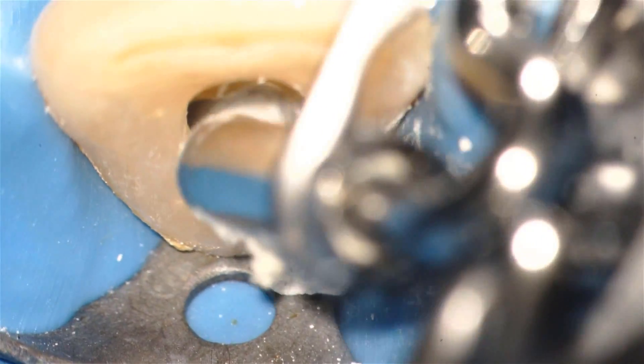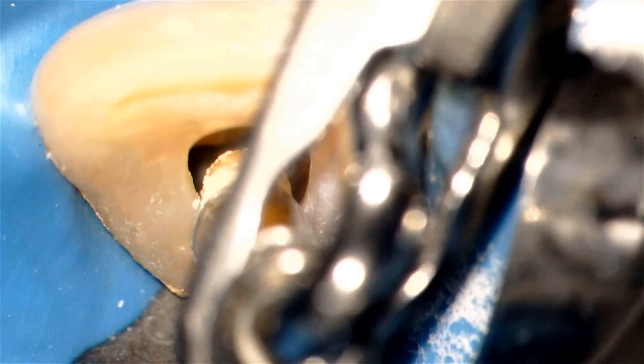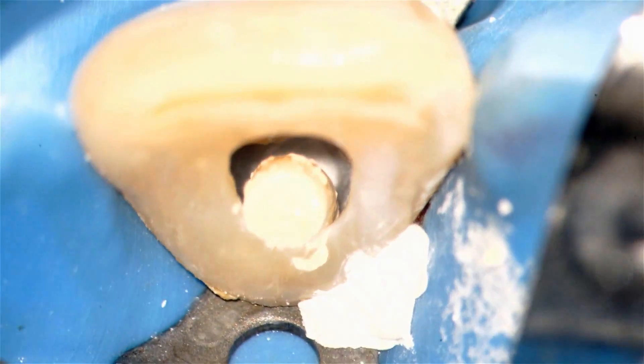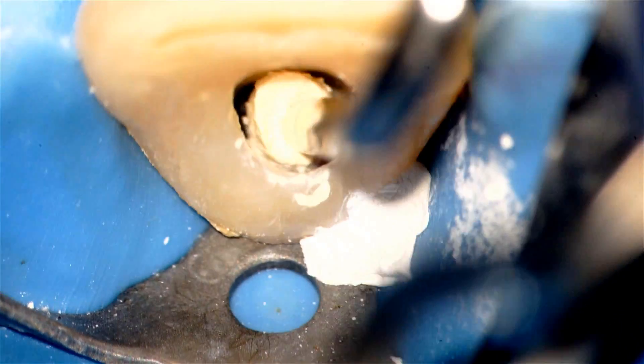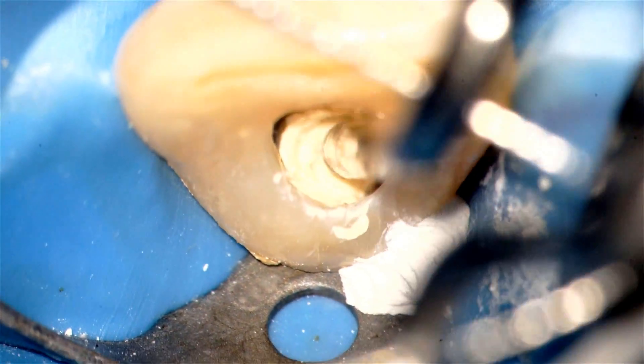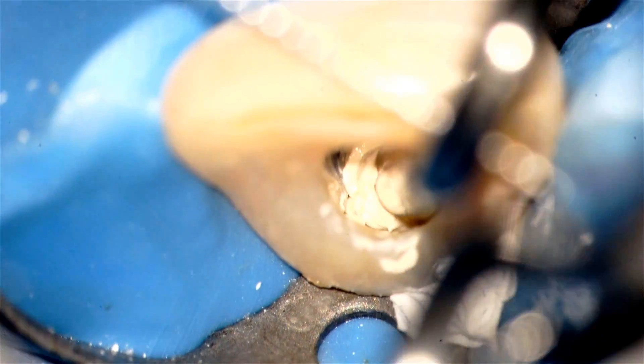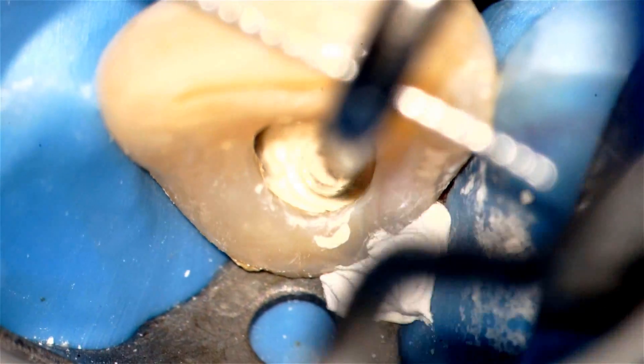Now I'm placing Biodentine. Biodentine has very good compressive strength properties, and so it's an ideal material to place in a large defect like that. It also has bioactive properties, and it stimulates calcification when it's opposed next to tissue fluids down deep in the sulcus.